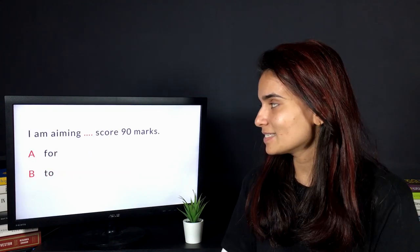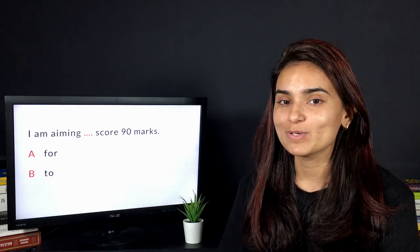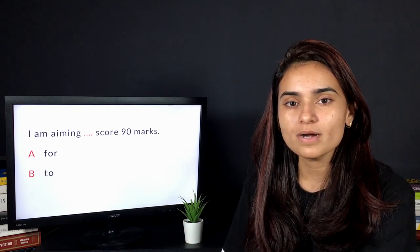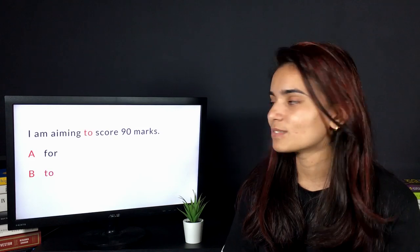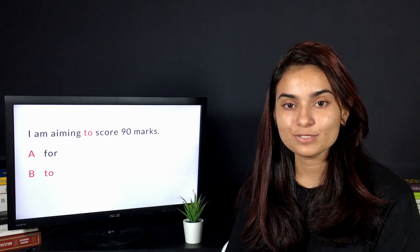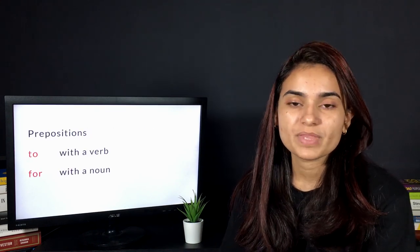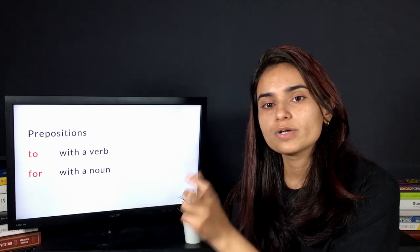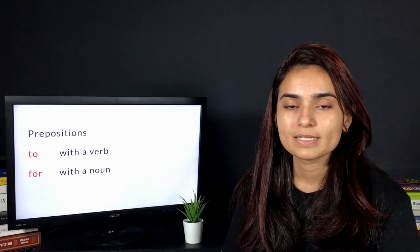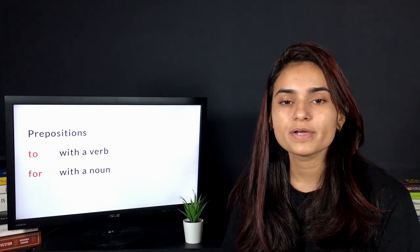Next question: I'm aiming dash score 90 marks. The correct answer is 'I'm aiming to score 90 marks.' The reason is 'to' is used with a verb. In the previous slide, we have 'to score'—score is a verb, and hence we have used 'to.' 'For' is used with a noun. For example, I'm working for someone, I'm working for Mindfree. Mindfree is a noun, and hence we use 'for' in that case.